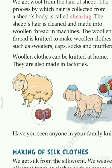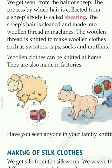So let's start with the making of wool. We get wool from the hair of sheep. The process by which hair is collected from a sheep's body is called shearing. The sheep's hair is cleaned and made into woolen thread in a machine. The woolen thread is then knitted to make woolen clothes such as sweaters, caps, socks, and mufflers.